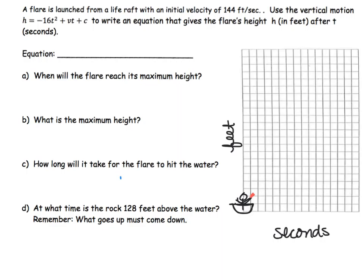This problem states that a flare is launched from a life raft with an initial velocity of 144 feet per second. Use the vertical motion equation h equals negative 16t squared plus vt plus c to write an equation that gives the flare's height after t seconds. Now what you need to know is that v in this equation represents velocity.